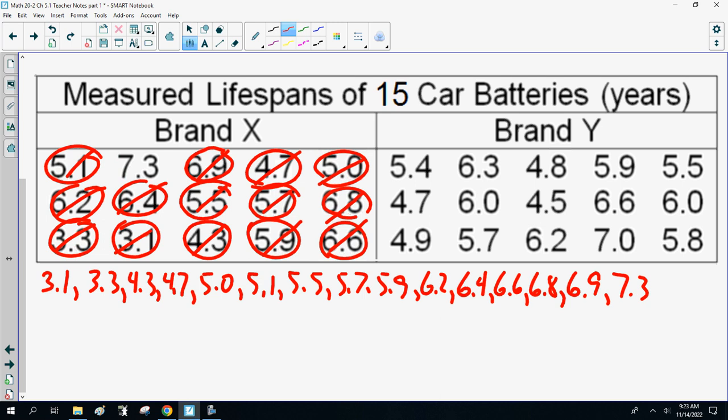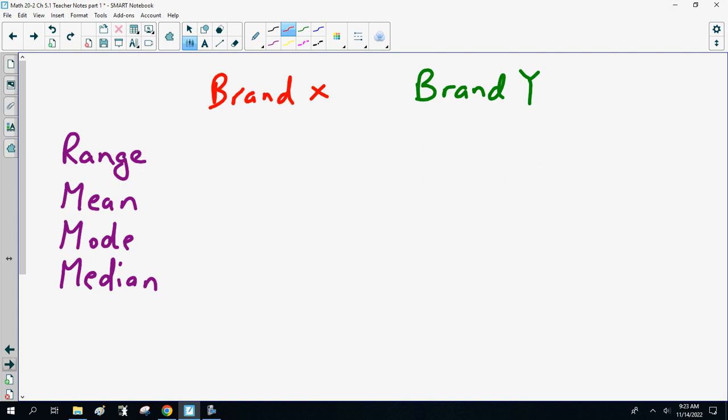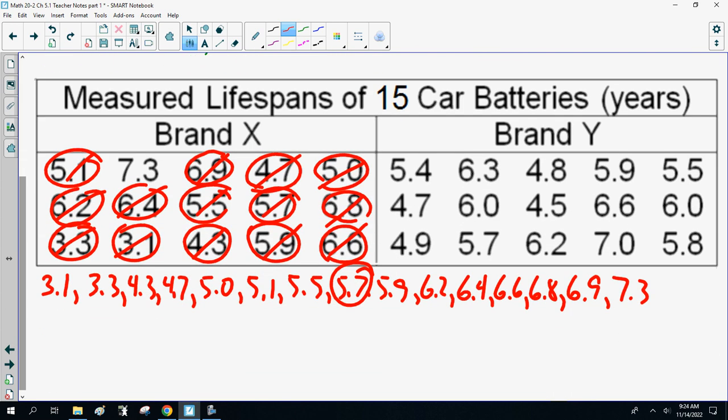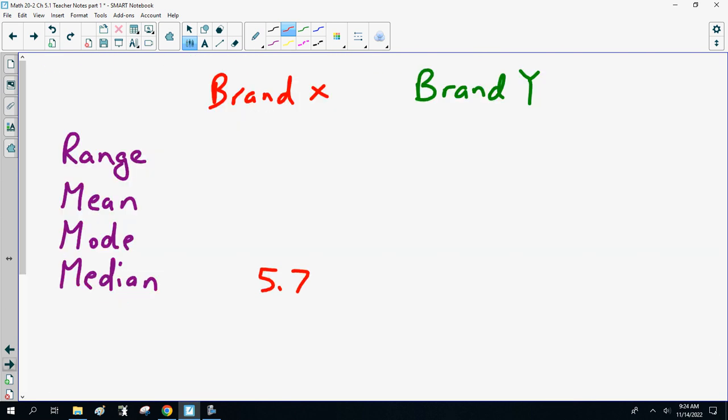Now, counting from both ends: 1, 2, 3, 4, 5, 6, 7, 8. 1, 2, 3, 4, 5, 6, 7, 8. Yes, 5.7 is my median. So the median is 5.7. Now, the range is 7.3 minus 3.1, which is 4.2. My mean, I plugged those numbers into the calculator, added them all up, I got 5.52 years. And there was no mode. Note I didn't show you calculating the range or the mean in detail.